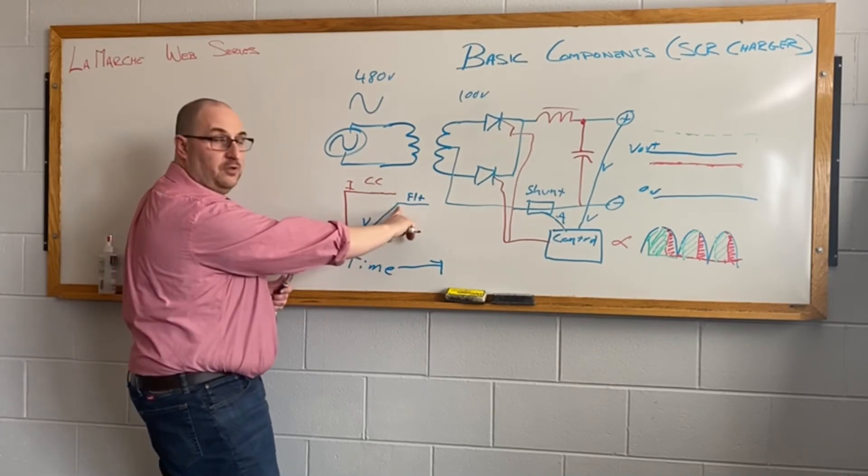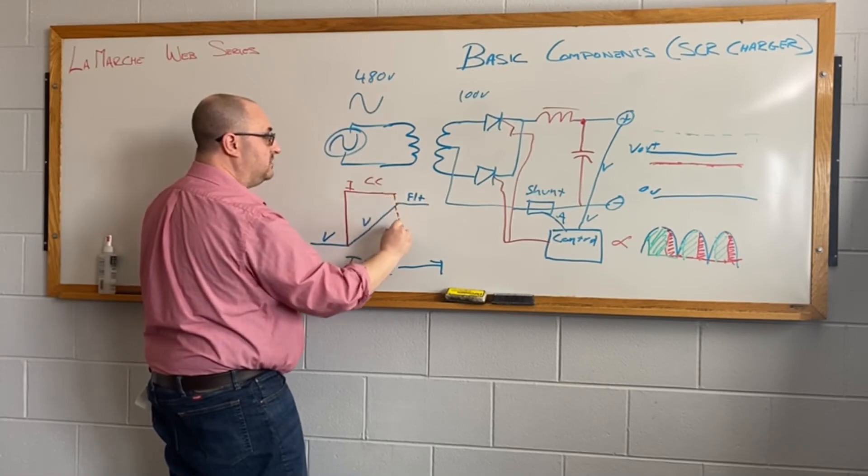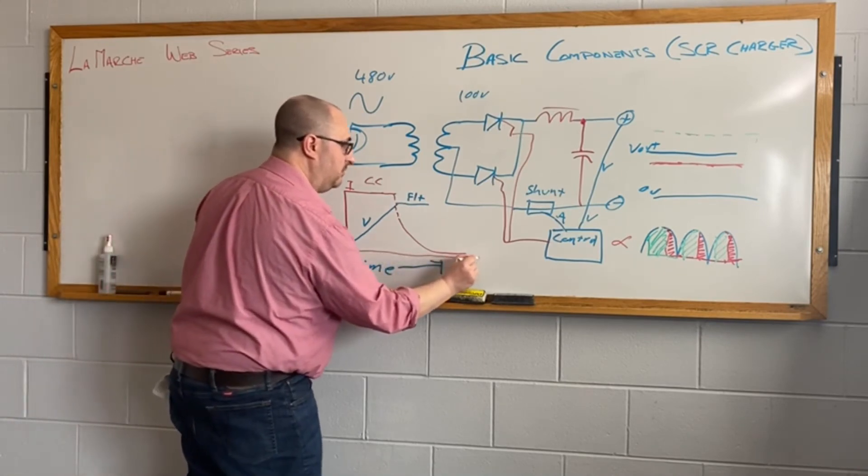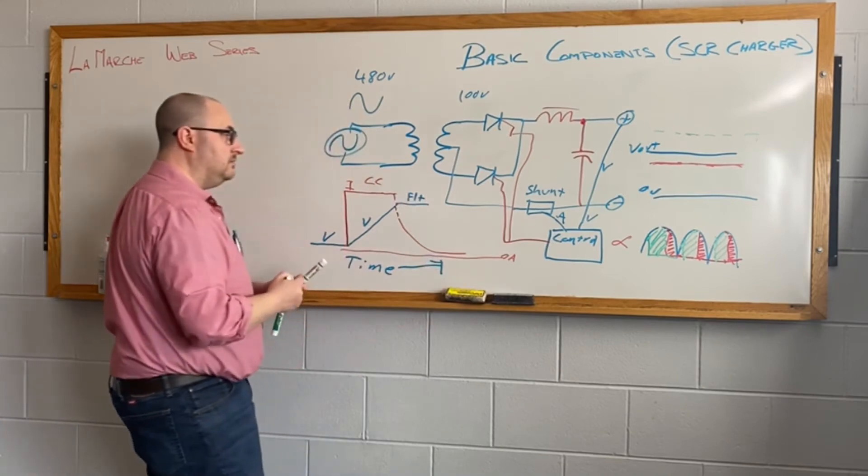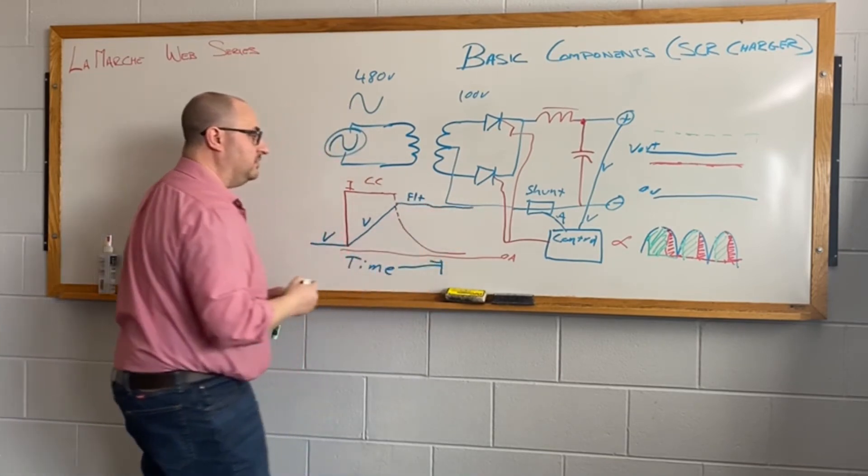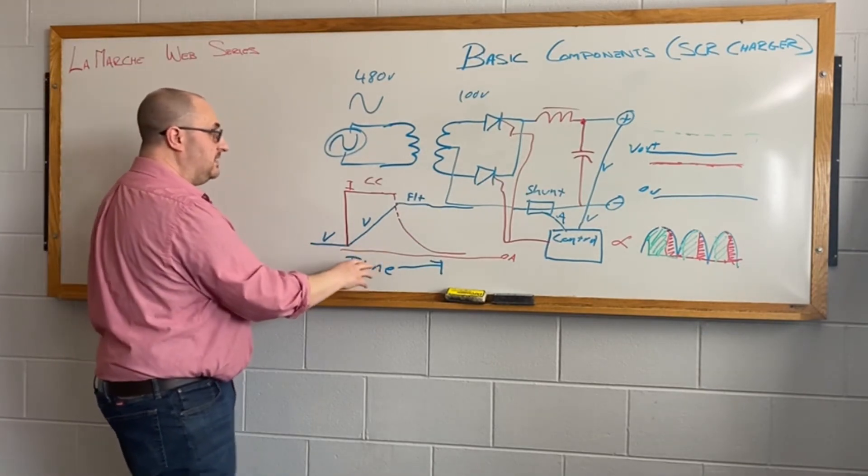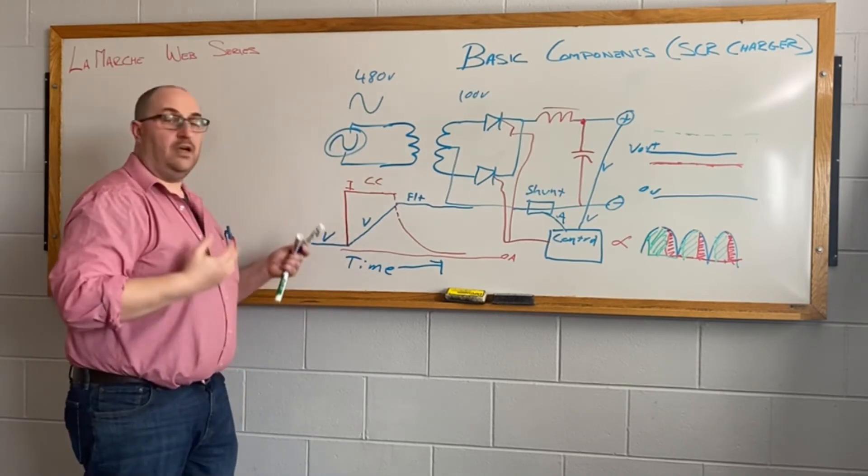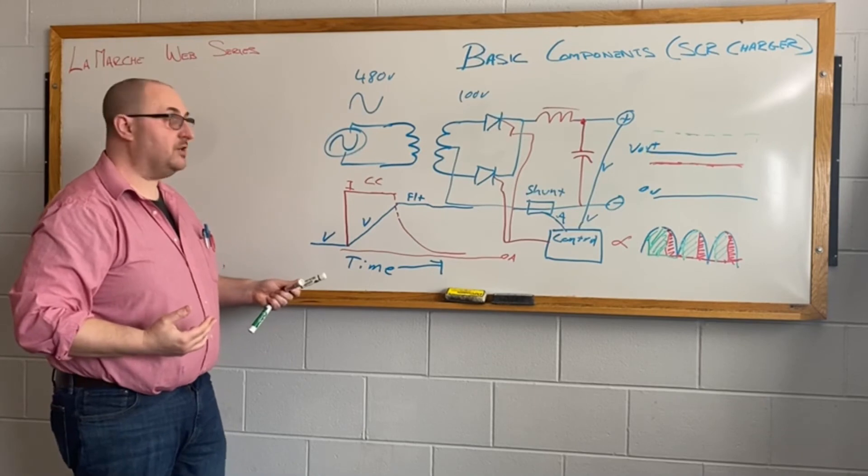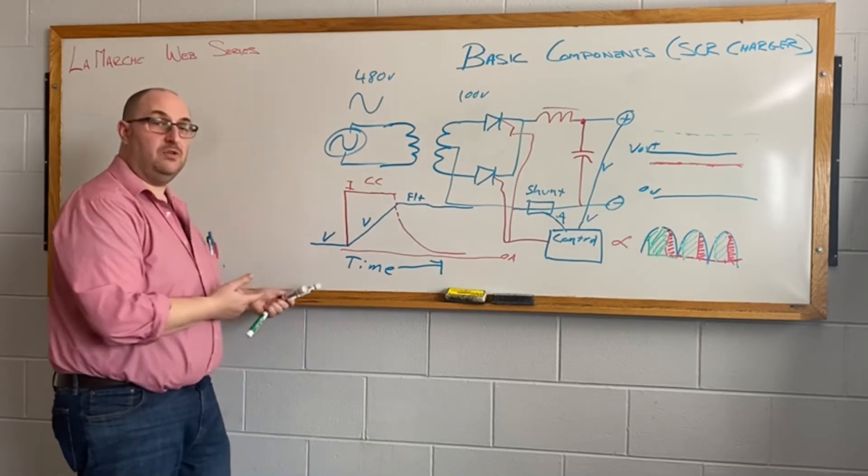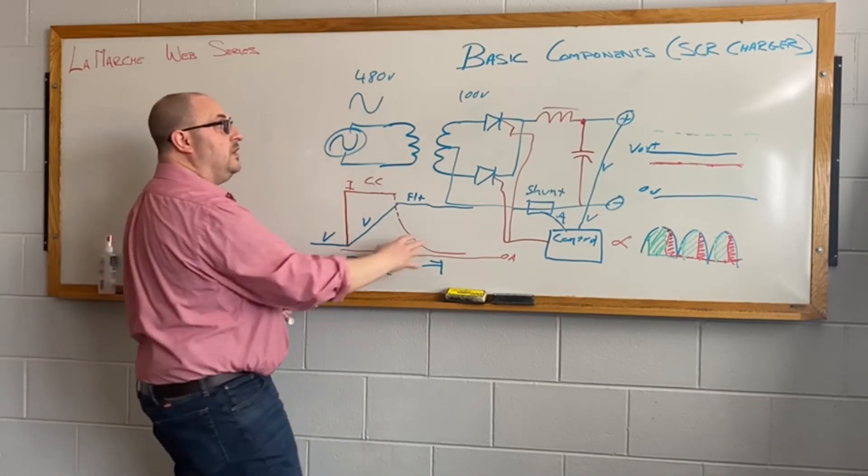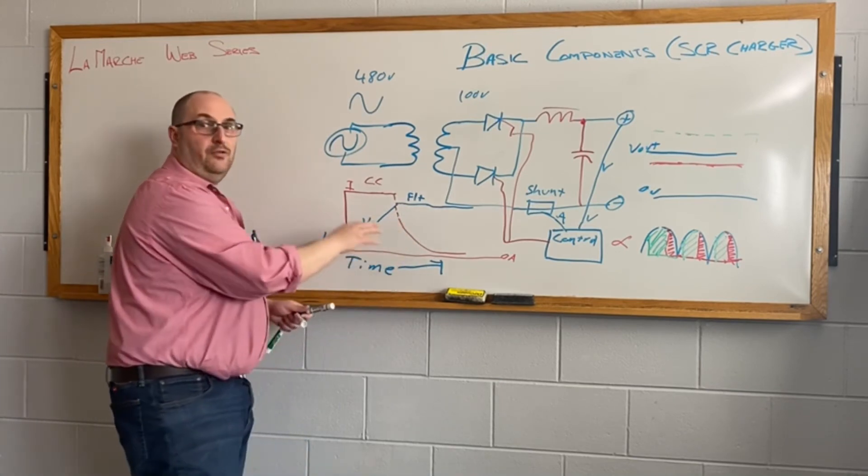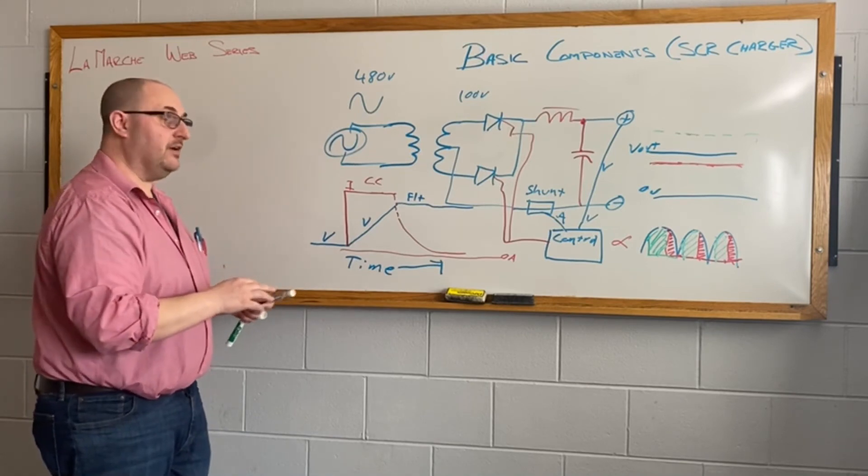Once it hits the float voltage set point, the current will start to taper down, and eventually it's going to hit an asymptote just a little bit above zero amps, where the float voltage will continue. So the idea of this is we need to be able to control this current because an empty battery will try to draw an infinite amount of current from the battery charger. That means it's not going to be healthy for the battery, and it's not going to be healthy for the charger either. So by controlling the recharge current and controlling the float voltage, we can now properly recharge just about any type of battery with this style charger.